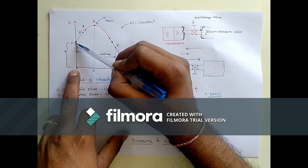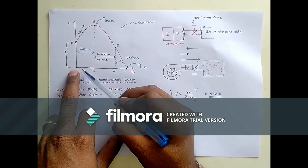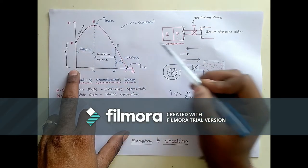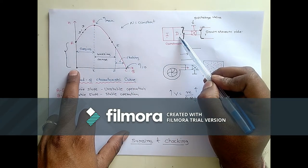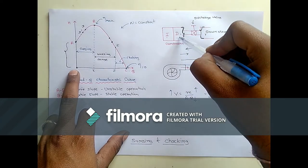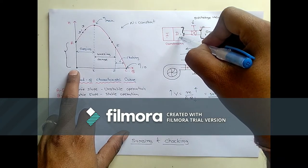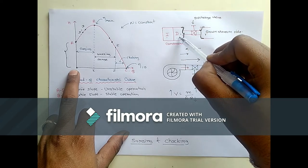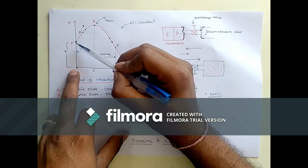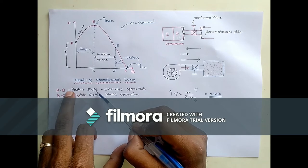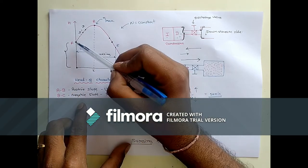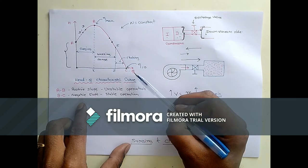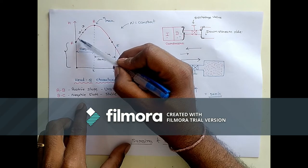As the discharge increases from this point to this point, the head also increases. That is due to the diffusion action in the diffuser. The function of the diffuser is to convert the kinetic energy given by the impeller into pressure energy in the diffuser section. From A to B this is a positive slope and it is generally unstable operation. During A to B the pressure gradually increases with respect to discharge.